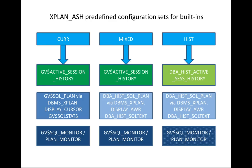These three configurations define how the active session history, execution plan, SQL text, and real-time SQL monitoring information are picked from different sources. The current configuration uses V$ACTIVE_SESSION_HISTORY for ASH, V$SQL_PLAN and DBMS_XPLAN.DISPLAY_CURSOR for execution plan details, V$SQLSTATS for the SQL text, and V$SQL_MONITOR and V$SQL_PLAN_MONITOR for real-time SQL monitoring information.